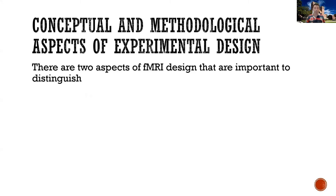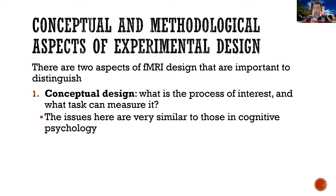When you set up fMRI experiments — and in fact, any other type of experimental approach — there are at least two different levels of experimental design that are relevant. The first is the so-called conceptual design, which is pretty general to any experimental approach. The questions here are: what is the process of interest, and what is a task that will allow me to tap into that process? These issues are pretty much the same as those encountered in designing a cognitive psychology experiment.